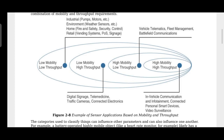Another category is high mobility, low throughput — examples include vehicle telematics, fleet management, and battlefield communication.